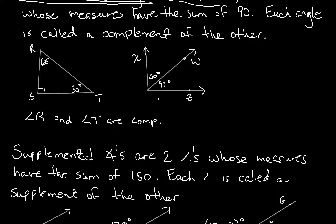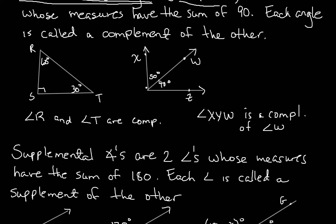On this one, Angle XYW is a complement of Angle WYZ. So complementary angles add up to 90.